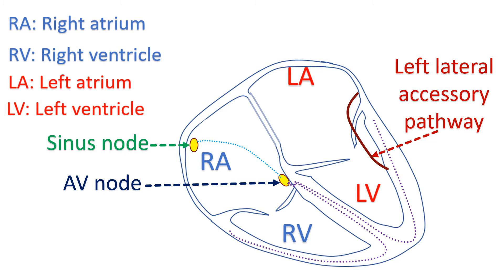When adenosine prolongs the AV nodal conduction, conduction through the slower accessory pathway becomes manifest as pre-excitation. Adenosine usually has no effect on accessory pathways, except for atrio-fascicular pathways and permanent junctional reciprocating tachycardia.